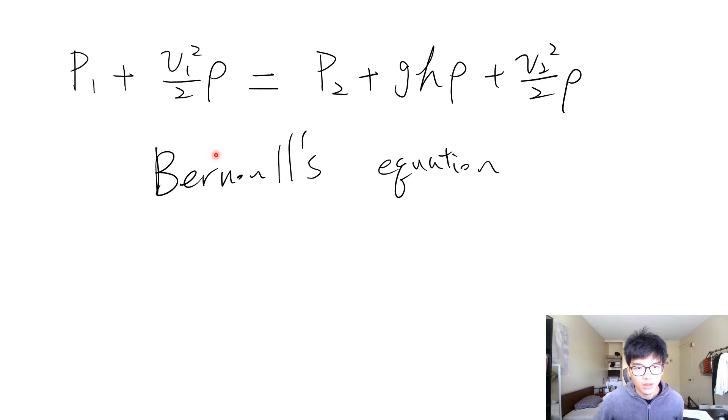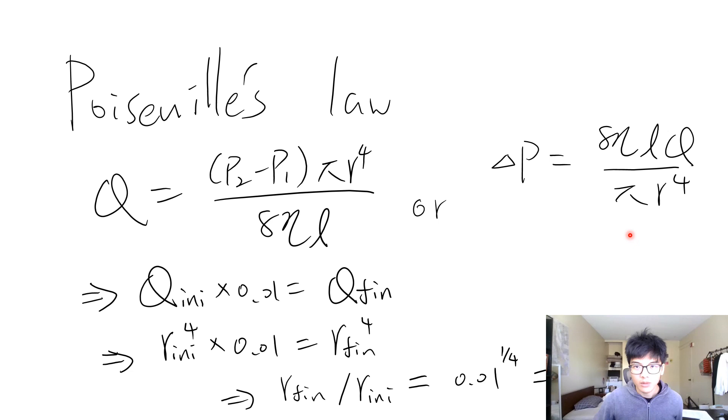And next one, so this one is for problem 10 and it's an application of Poiseuille's law, Poiseuille's law. It's this one, or equivalently you can write it, you can just move all the factors from the right hand side except the difference of pressure to the left, and you have this one, this expression.